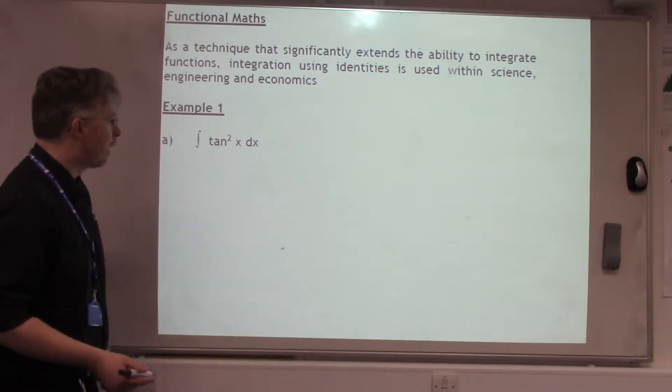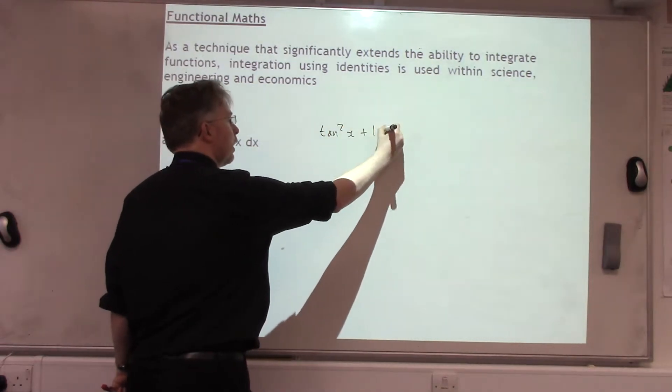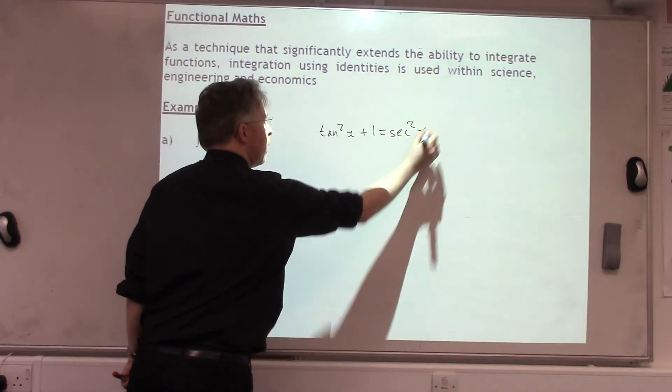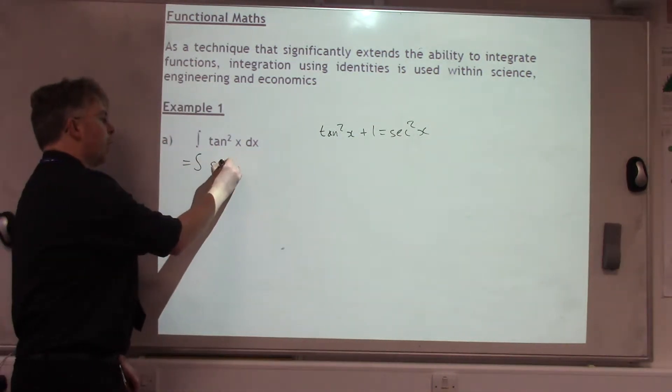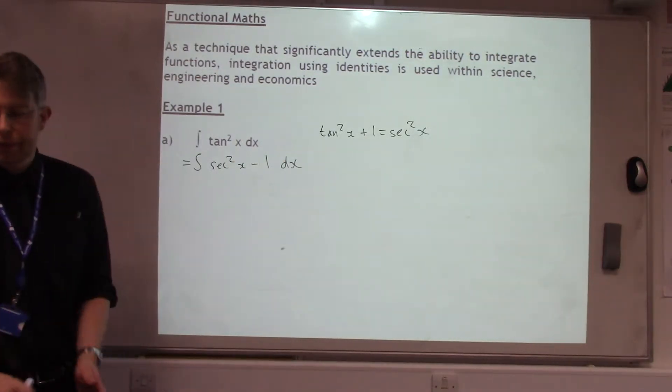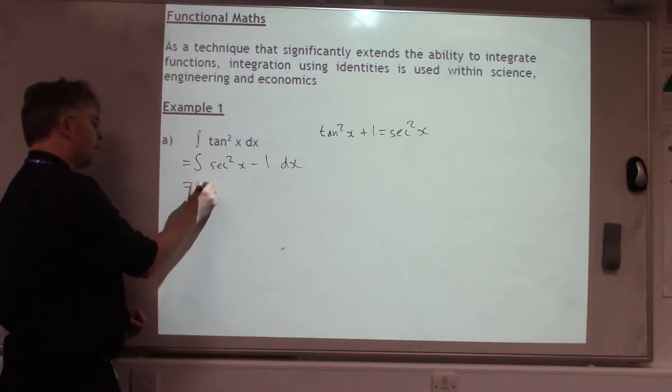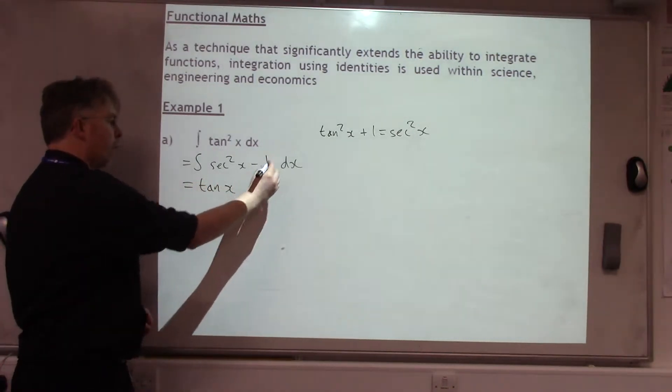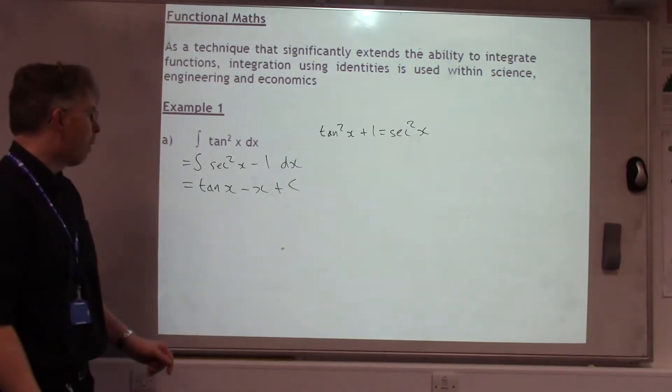tan squared of x, well, the identity revolving around tan squared is tan²x + 1 = sec²x. So, we can replace tan squared with sec²x - 1. Now, sec²x integrates to tan, so we get tan x, 1 integrates to x. So, our answer is simply tan x - x + c.